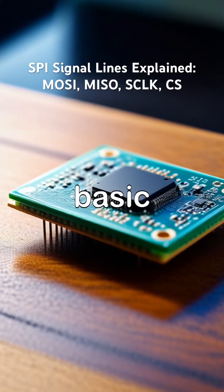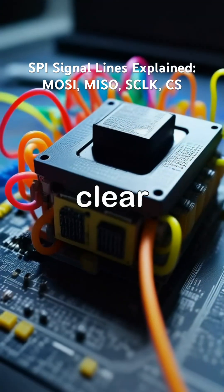SPI communication is built using four basic signal lines, each with a clear and fixed role.